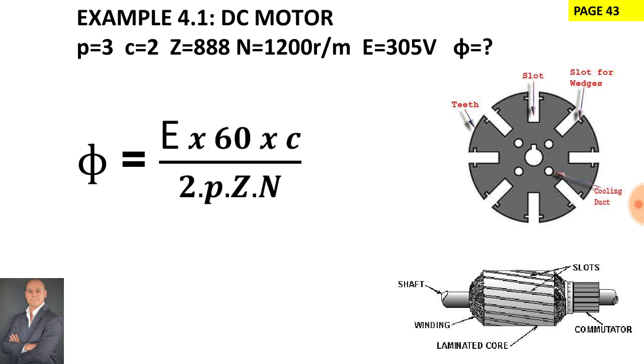We have to manipulate the equation to get the flux per pole on its own so therefore it's going to be the generated EMF multiplied by 60 multiplied by the number of parallel paths all over 2 times the pole pairs multiplied by the number of armature conductors and the speed at which the armature rotates.